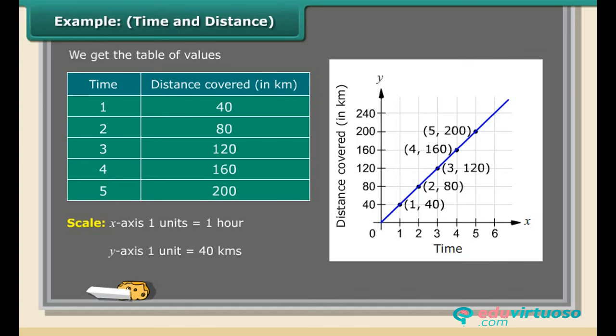1. In vertical axis, 160 kilometers corresponds to 4 hours in horizontal axis. 2. In horizontal axis, 2 and a half hours corresponds to 100 kilometers in vertical axis. Therefore, Akshay covers 160 kilometers in 4 hours. And in 2 and a half hours, he is able to cover a distance of 100 kilometers.